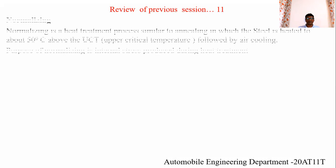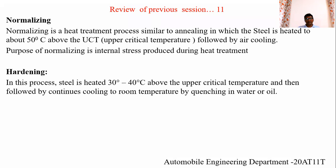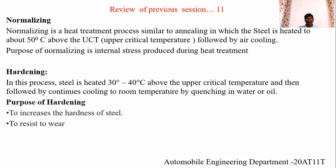Starting with the review of session 11 on heat treatment processes. Normalizing: the steel is heated to 50 degrees Celsius above the upper critical temperature and then cooled. The purpose is to remove internal stresses produced during heat treatment. Hardening: the steel is heated to 30 to 40 degrees Celsius above the upper critical temperature and then cooled to room temperature by quenching in water or oil. The purpose is to increase the hardness and wear resistance of steel.